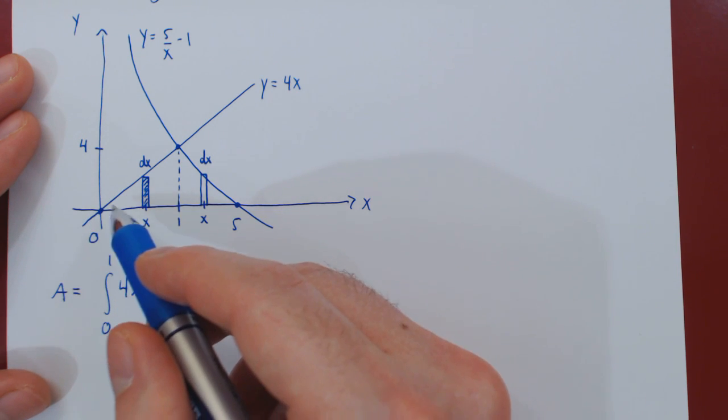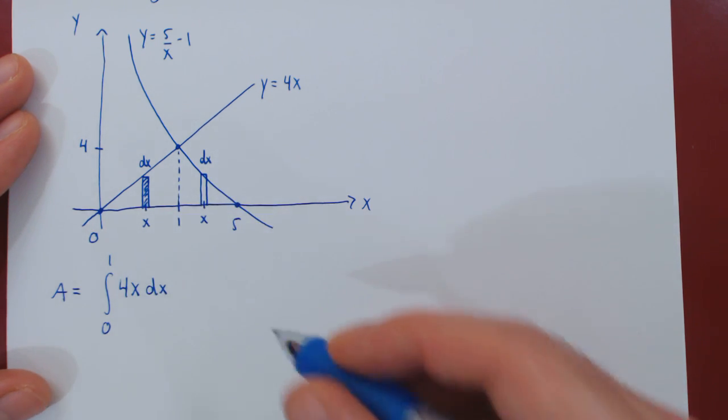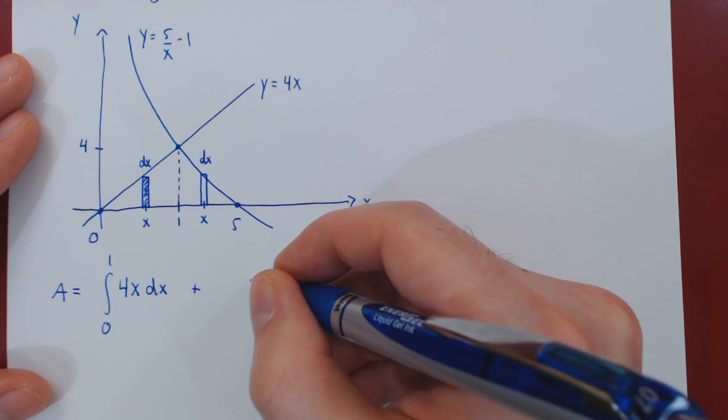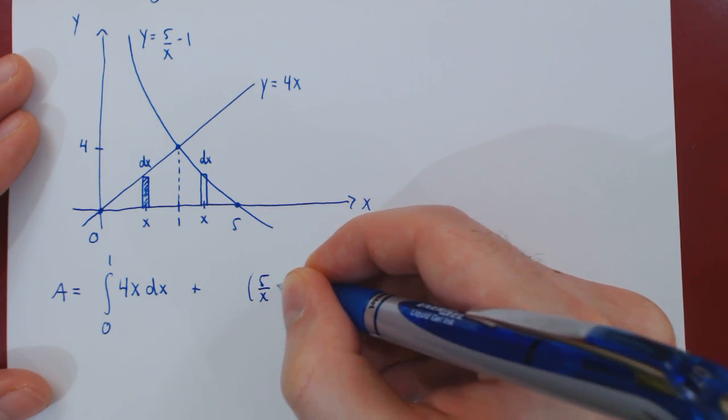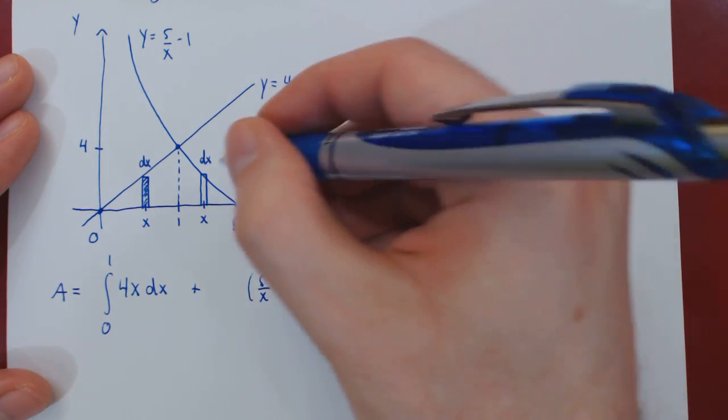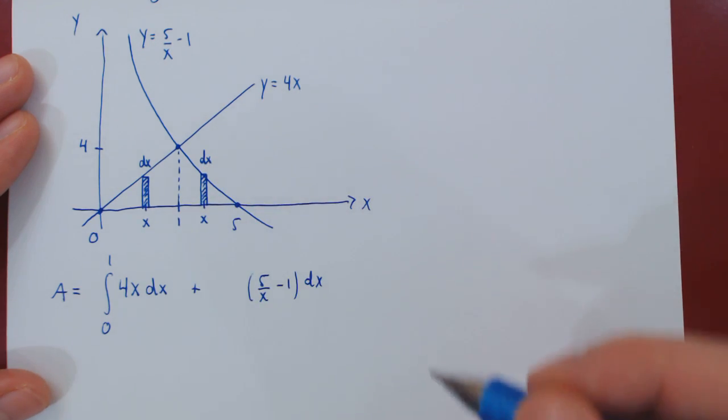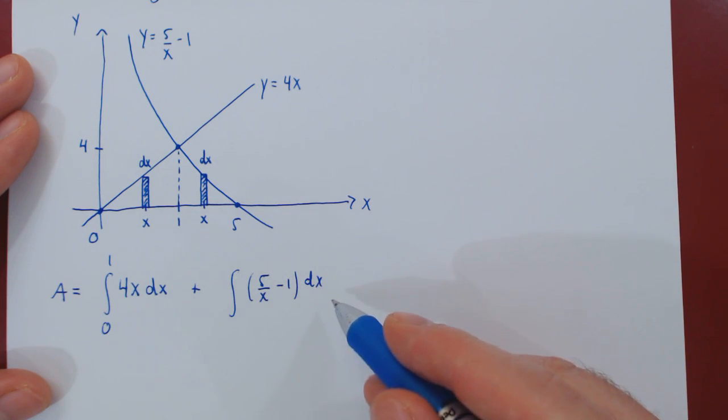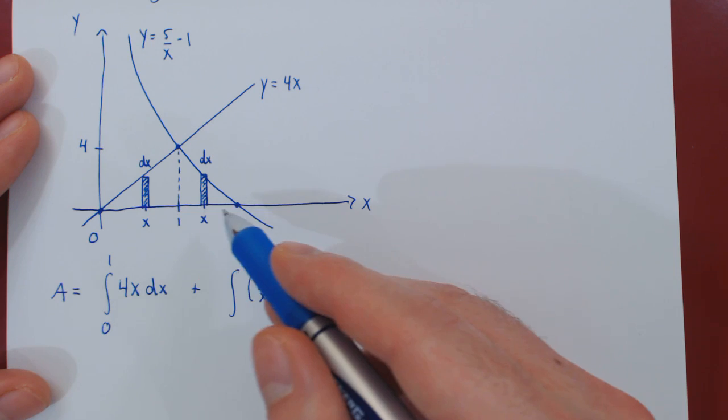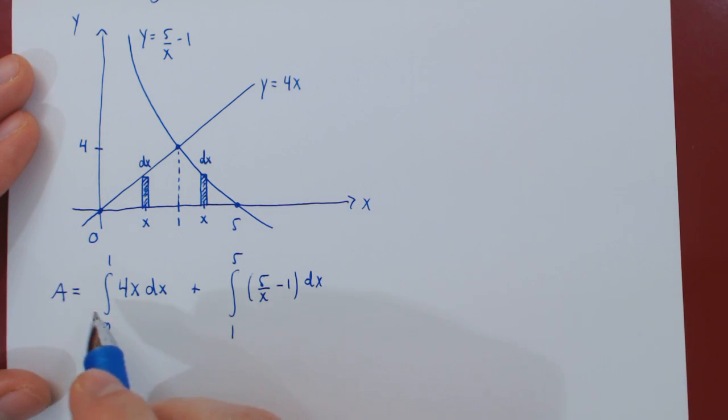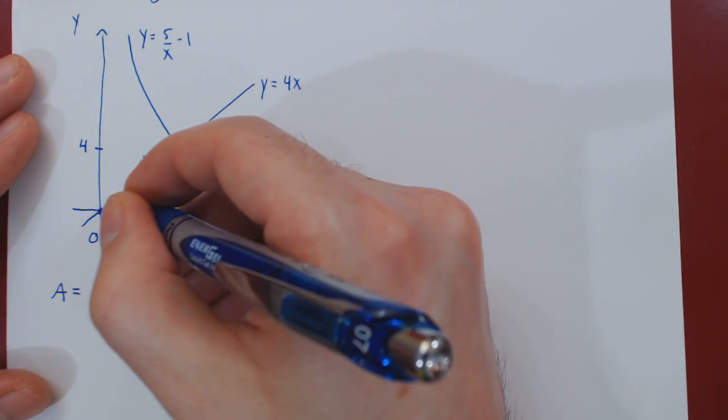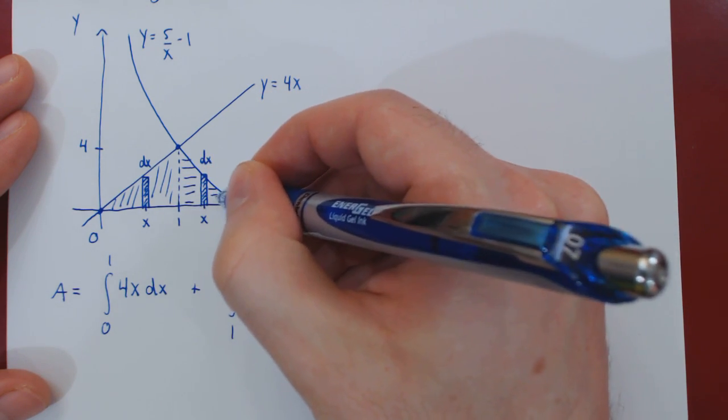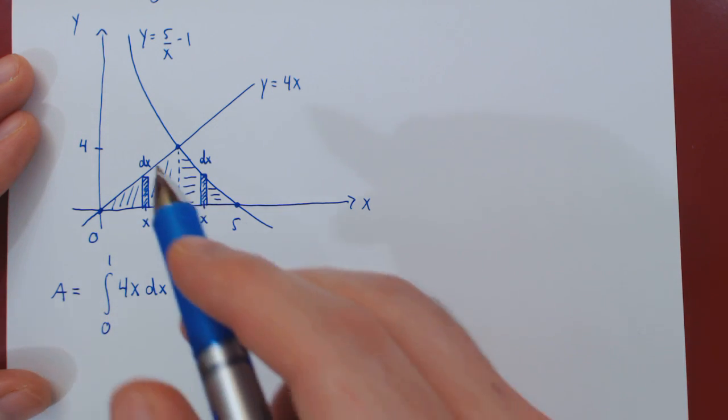That's only giving us the area of part of the region, so we have to add the area of the second part. The area of the rectangle here is the height, 5 over x minus 1, times the width dx. So the area of our second generic rectangle. To get the total area of this region, we have to sum the area of each generic rectangle, but now from 1 to 5. Adding up these two definite integrals leads us to adding up the area of the first part of the region and then the second part of the region. This will give us the total area of the region.